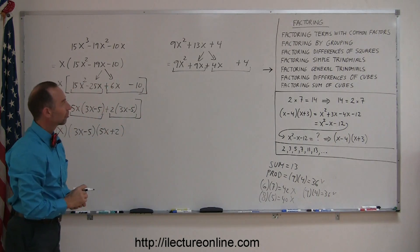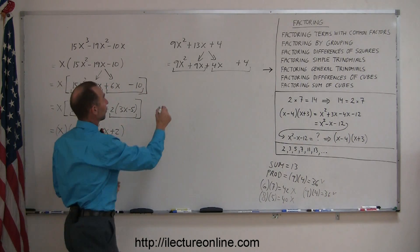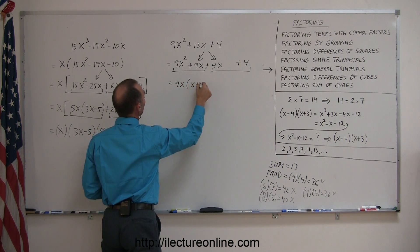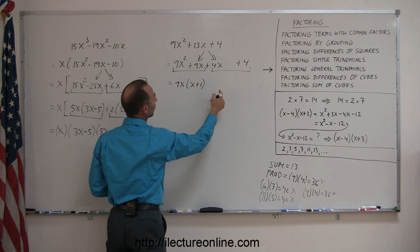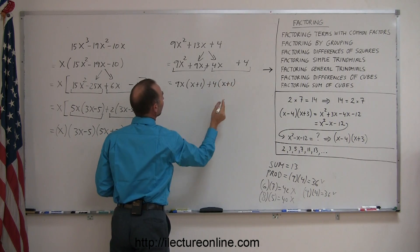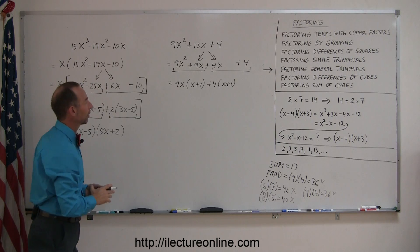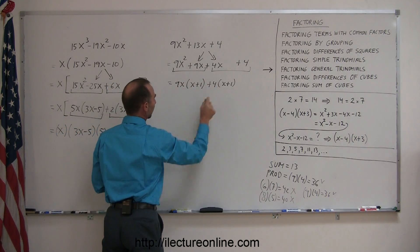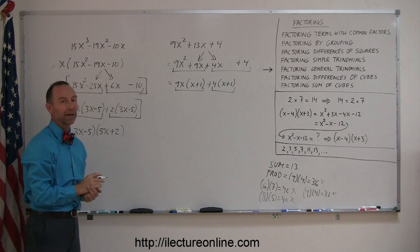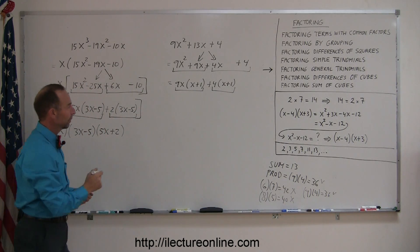The first group looks like we could factor out a 9x. So this is equal to 9x, and we're left with x plus 1. And over here, it looks like we could factor out a 4, and you're left with x plus 1. And again, that looks pretty good, because we have x plus 1 here and x plus 1 there.